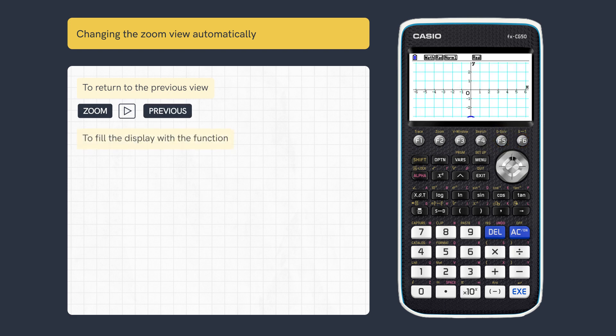To fill the display along the Y axis, press Zoom and then Auto. Scroll up to view the horizontal scale.